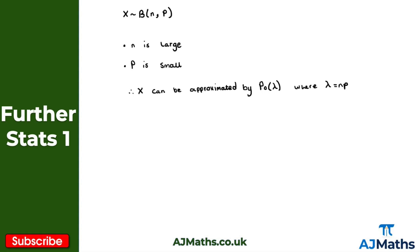To help illustrate why this approximation works, let's consider the variance of a binomial distribution - a formula you should be familiar with. If x follows a binomial distribution, the variance of x is given as np times 1 minus p.